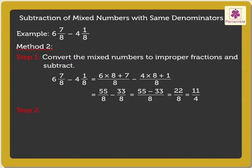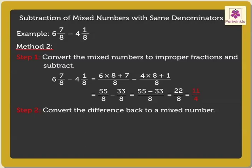Step 2: Convert the difference back to a mixed number. Here, in order to convert 11 upon 4 into a mixed fraction, we divide 11 by 4. We get the quotient as 2 and the remainder as 3.